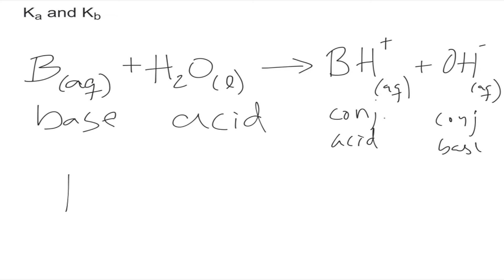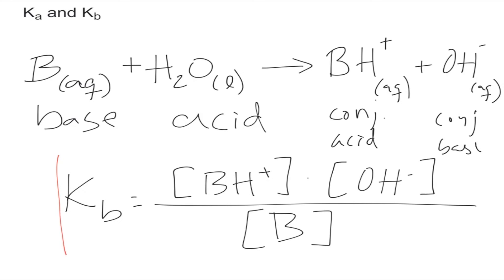Just like the Ka, the Kb will be equal to the concentration of the products. So we have BH plus times the concentration of the other product, which is OH minus, and that will be over the concentration of the base. Just like before, we do not include water in this reaction. This would be the Kb dissociation constant of this base.